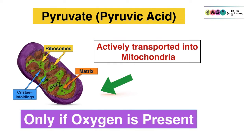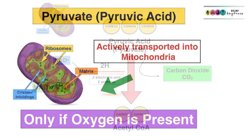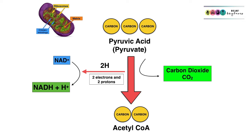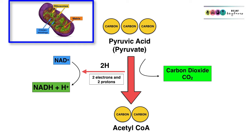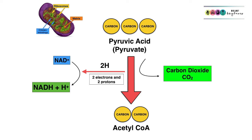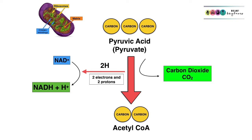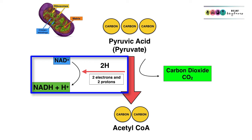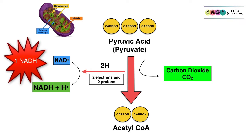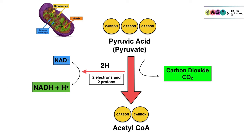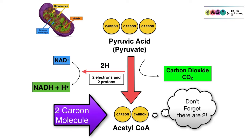The next stage after glycolysis only takes place if there is oxygen present. If there is, each of the pyruvate molecules is actively transported into the mitochondria. Let's discuss what happens to one pyruvic acid molecule: first, it loses a carbon in the form of carbon dioxide; second, it loses electrons — removed by taking pairs of hydrogen atoms — which are trapped by NAD+ to form NADH. We form one NADH and, at the end, acetyl-CoA, a two-carbon molecule. Remember, there are two of them.